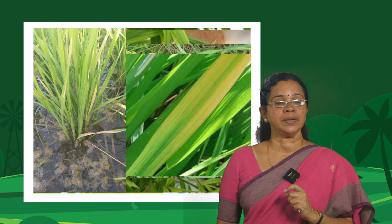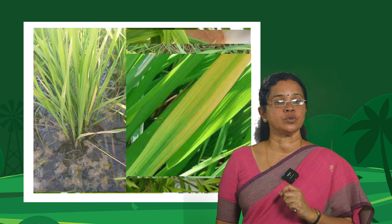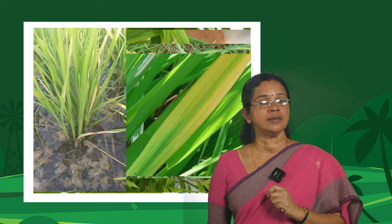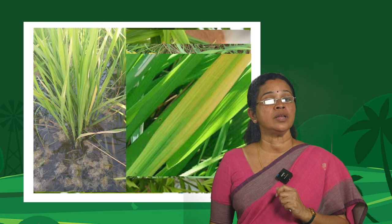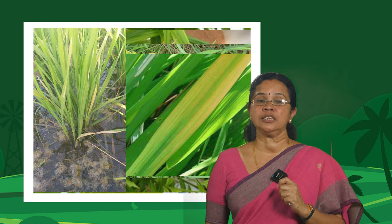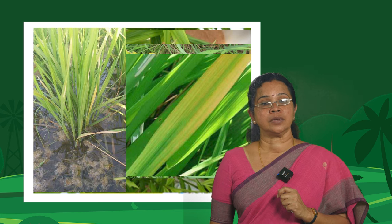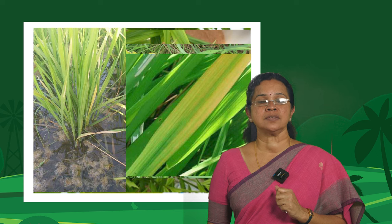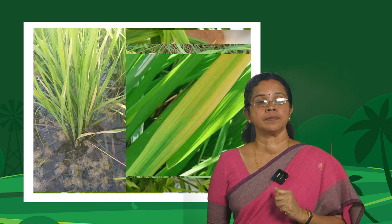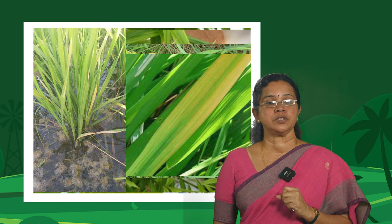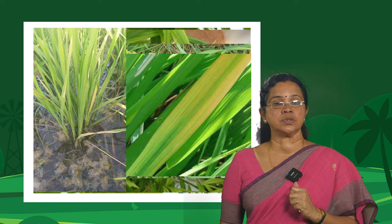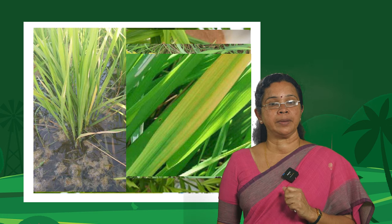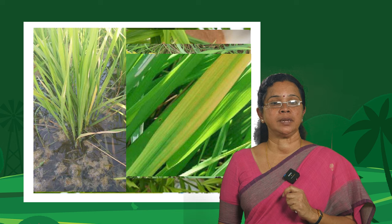You can see that typical intervenal chlorosis — the veins are green in color and the intervenal areas are yellowish in color. That is the typical intervenal chlorosis pattern for magnesium deficiency, seen in various crops including banana and rice. Usually in upland rice, after heavy showers in sandy soils, you can see magnesium deficiency appearing.